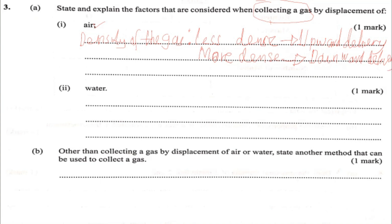Now how does the method of upward delivery look like? Here you have the delivery tip that brings the gas to the gas jar. So this is how upward delivery looks like. The reason the gas is collected by upward delivery is that the gas is less dense than air. Examples of gases collected by upward delivery: one is dry hydrogen gas, and we also have dry carbon dioxide.